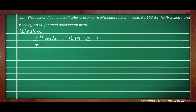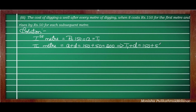For the second meter (2 meters total), the additional charge is Rs.50. So A + D = 150 + 50 = 200. This 200 is T2. In alternate form, T2 = T1 + D = 150 + 50 = 200. Both forms are correct.